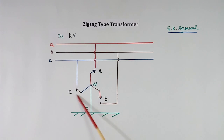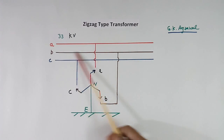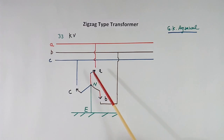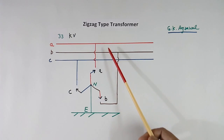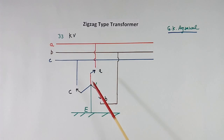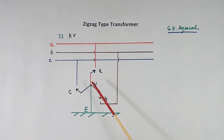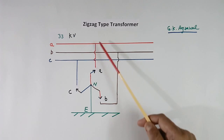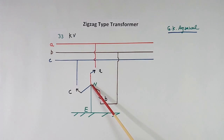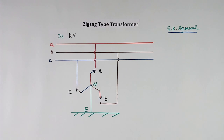There is a special type: the zigzag type transformer, which is used for third harmonic filtering and to generate an earth reference point. This is a zigzag type transformer connected to a 33 kV line — transformer terminals A, B, C are connected to the ABC high voltage line and the neutral is connected to ground. It has no load connected and no tapping, but simply connected to the line it provides grounding and filters third harmonics.